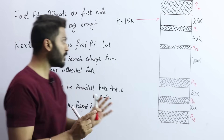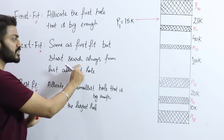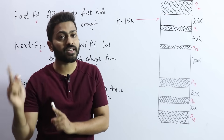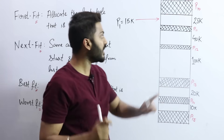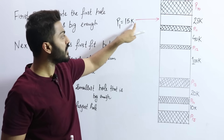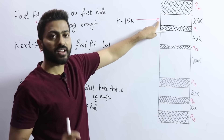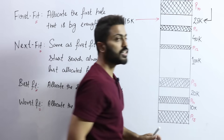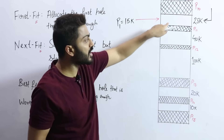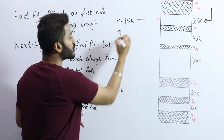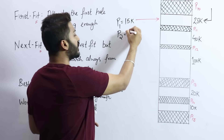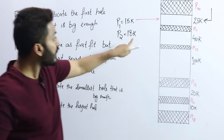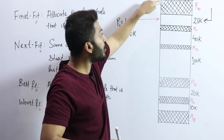Next Fit is a modified version of First Fit. In Next Fit, we do the same as First Fit, but we always start searching from the last allocated hole. Whatever hole was last allocated to a process, we keep a pointer on that. Let's say P1 was allocated here — we keep a pointer at that area. Next time, if another process P2 arrives with size 18KB, it will not start searching from the beginning.